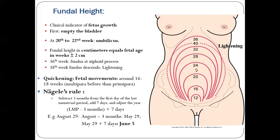NCLEX board sometimes asks: if a mother came in with a history of 20 weeks of pregnancy, where should the fundal height be? At 20 to 22 weeks, the fundal height should be up to the umbilicus. Three important surface landmarks are: pubic symphysis, umbilicus, and xiphoid process. During 20 to 22 weeks, fundal height in centimeters equals fetal length, 20 plus or minus two centimeters.